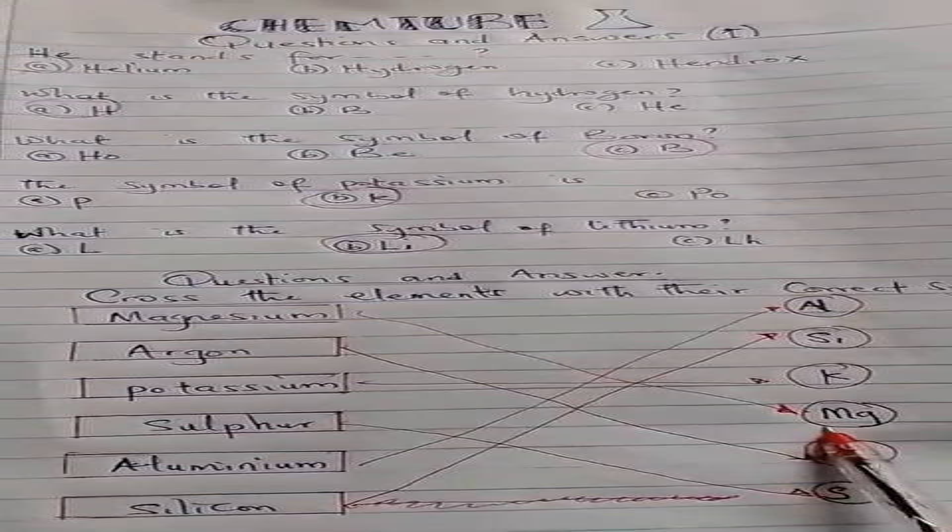We have magnesium as Mg, argon as Ar, potassium as K, sulfur as S, aluminium as Al, and silicon as Si.